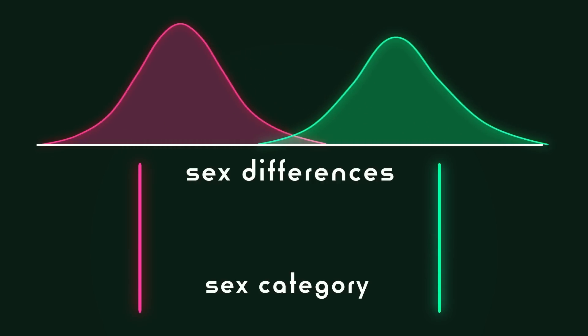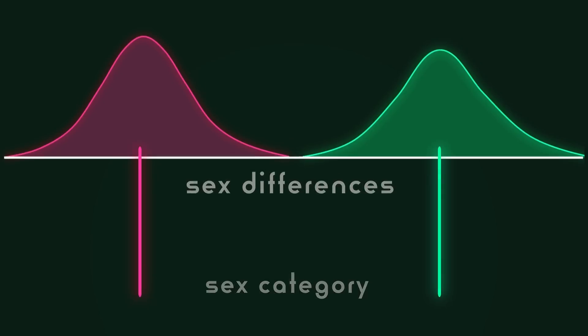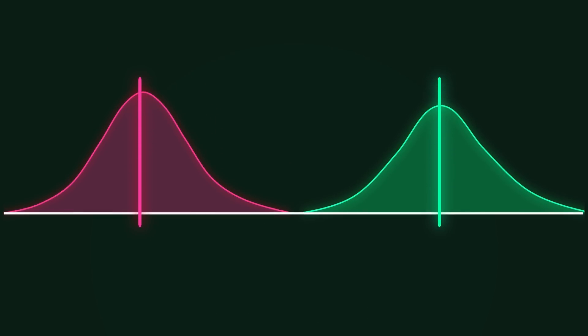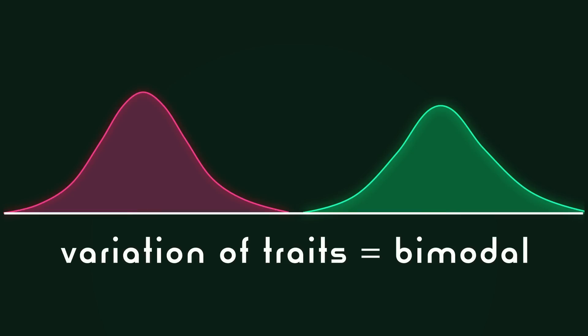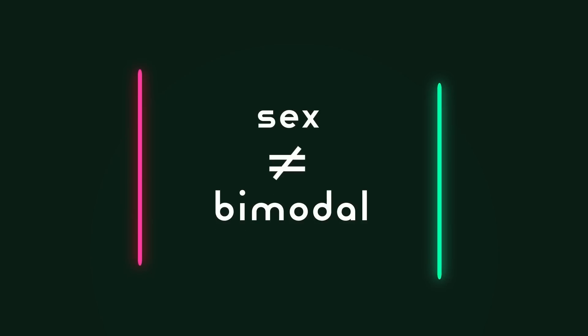Rather, it is a binary system that is consistent across our species with plenty of variation within the two categories. Thus, it is the variation of traits within sex category that is bimodal, not sex category itself.